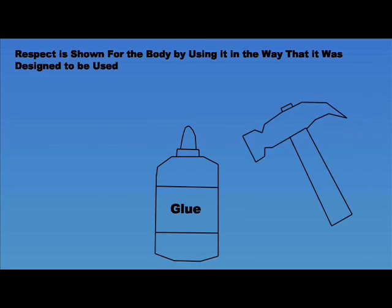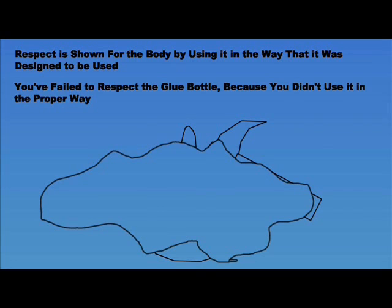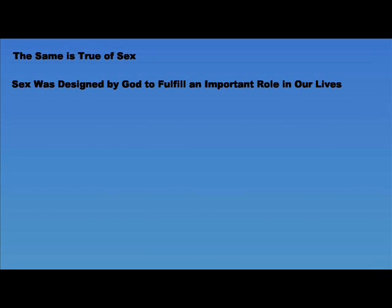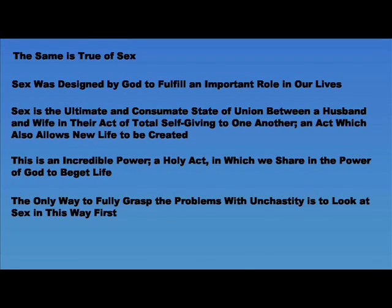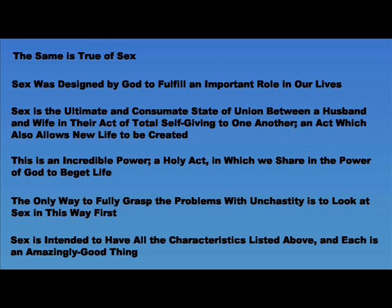How do you show proper respect for the body? Well, you show respect for the body by using it in the way that it was designed to be used. For example, if you take a bottle of glue and you smash it open with a hammer, getting glue everywhere, you failed to properly respect the glue bottle because you didn't use it in the way that it was designed to be used. The same is true of all forms of sex. The bodily activity known as sex was designed by God to fulfill an important role in our lives — to serve as the ultimate and consummate stage of union between a husband and wife in their act of total self-giving to one another, an act which also allows for new life to be created. This is a magnificent power and an incredible holy act in which we share in the power of God to beget life. And the only way that we can fully understand the problems with sexual unchastity is by looking at the act in this way first, having all the characteristics and functions listed above and reminding ourselves that every last one is an amazingly good thing.